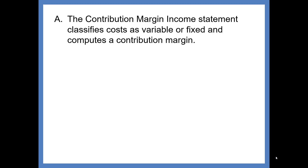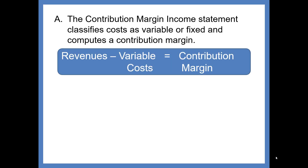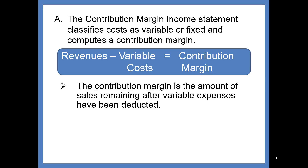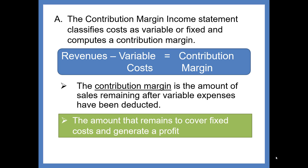The Contribution Margin Income Statement classifies costs as variable or fixed and computes a Contribution Margin. The Contribution Margin is revenues minus variable costs, so the definition of Contribution Margin is sales that remain after variable expenses have been deducted. It is used to evaluate what is left to cover fixed costs and profits.